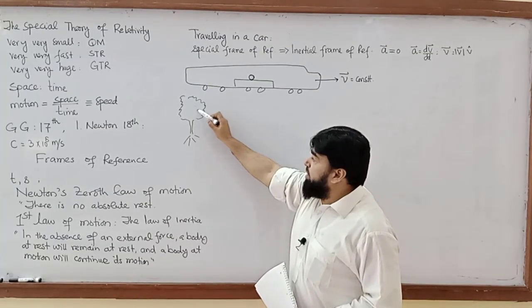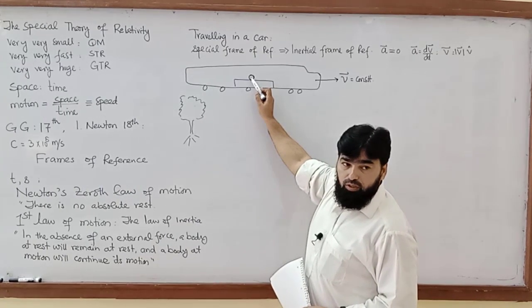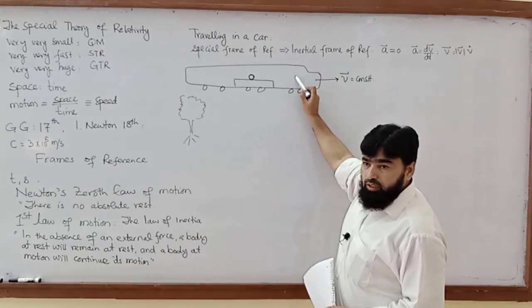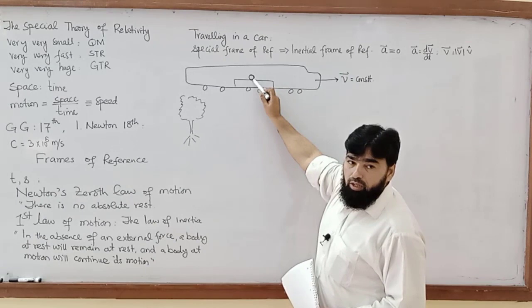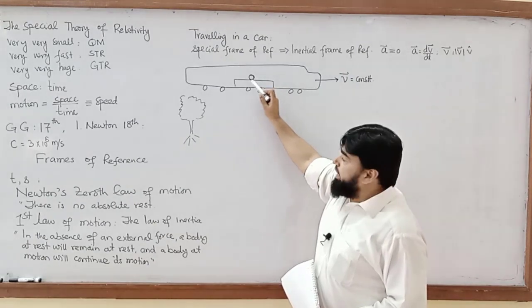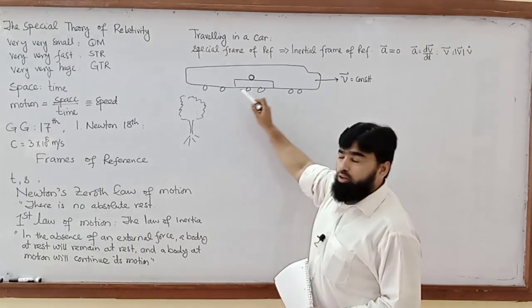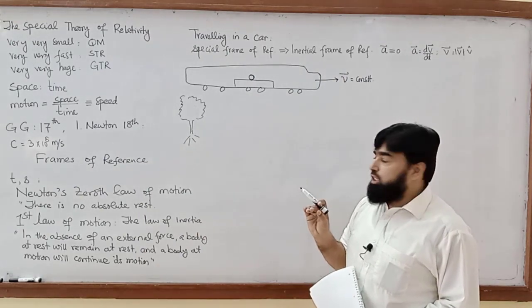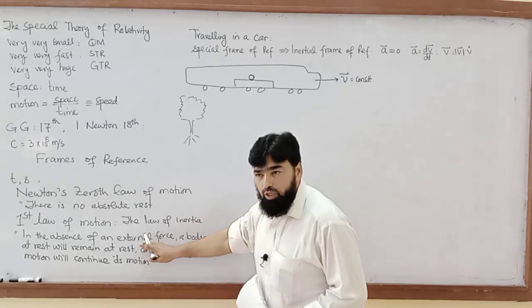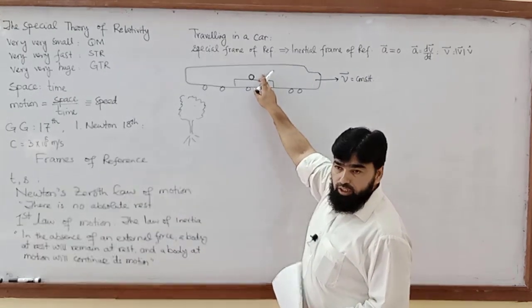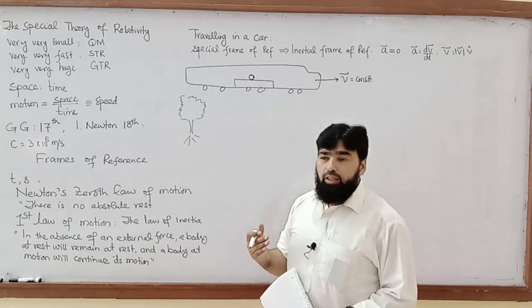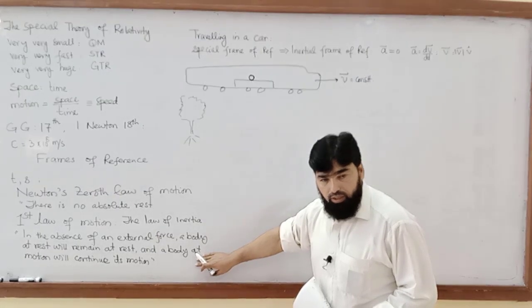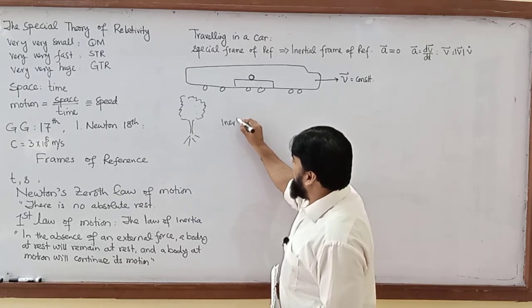According to both observers — the one in the train and the one at the tree — the observations are consistent, and the law of inertia holds. According to the observer inside the car, there is no external agency acting on the ball, so it is at rest. In the absence of any external force, the ball is either at rest or moving with constant speed, and both observations match the law of inertia.